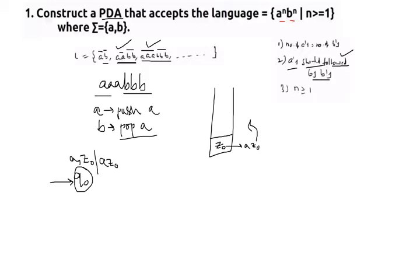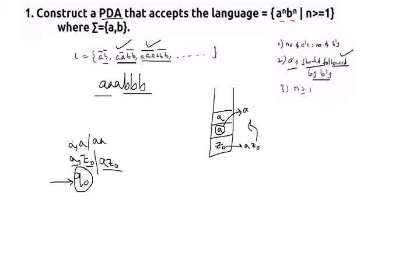The transition notation works as follows: the input symbol, whatever is at the top of the stack, and whatever you get next. When pushing another 'a' with 'a' already at the top, we pop that 'a', combine it with the new 'a', and throw back 'aa'. This self-loop continues for every input 'a' symbol. So after processing all three a's, three a's have been pushed onto the stack.